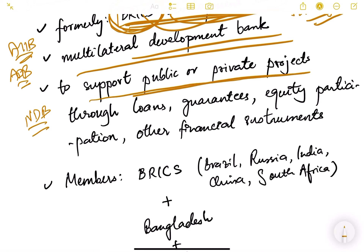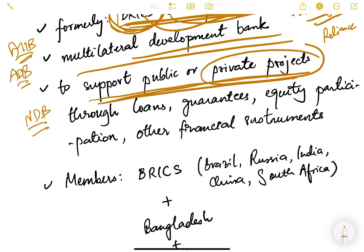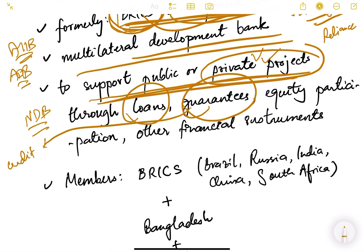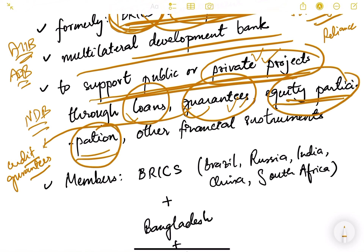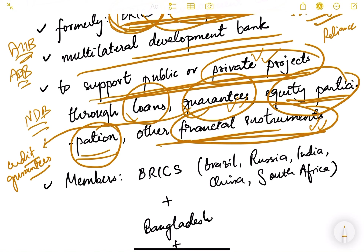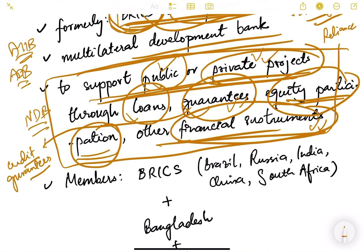The NDB supports both public and private projects. It provides financing in the form of loans, credit guarantees — where it guarantees loans taken from banks — equity participation by directly purchasing shares of private or public companies, and other financial instruments like derivatives and bonds. It supports financially in many different ways for both government and private projects.